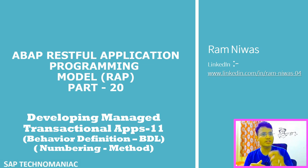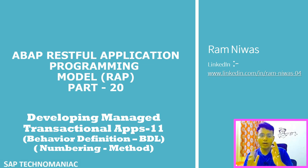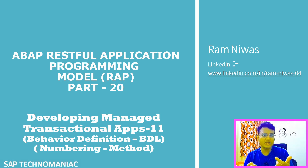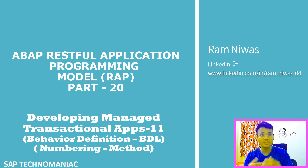We have already started in the last video. We created a method for the travel ID, and now we will write the code inside that method. Not only that — we will also create two more methods for booking and booking supplement to handle their numbering, so that whenever we create new instances, numbers are automatically generated.